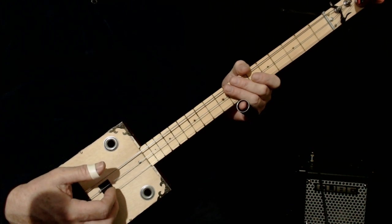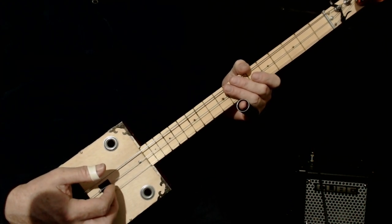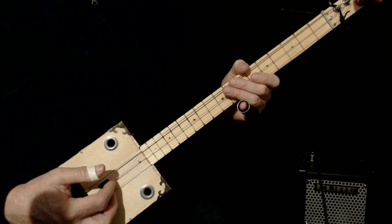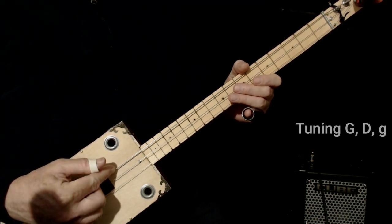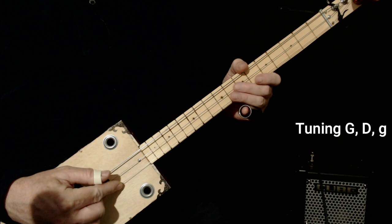Hi, today I'd like to show you how to play Tush by ZZ Top on your three-string cigar box guitar. I'm tuned to G on the low string, D in the middle, and G on the high string.